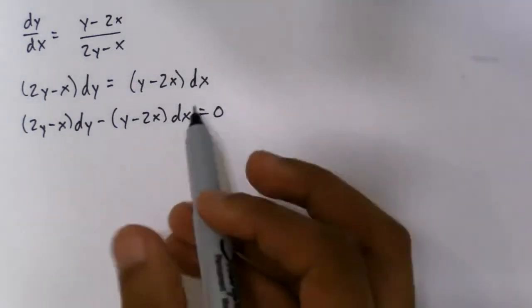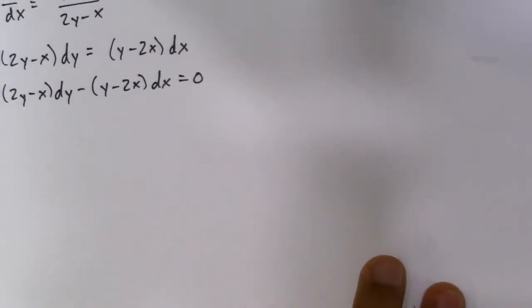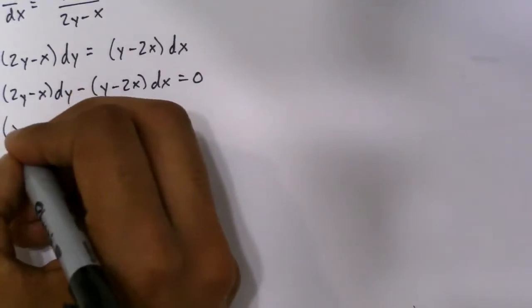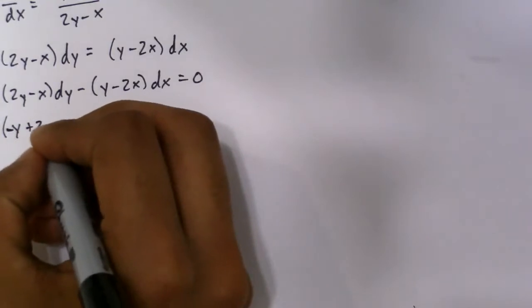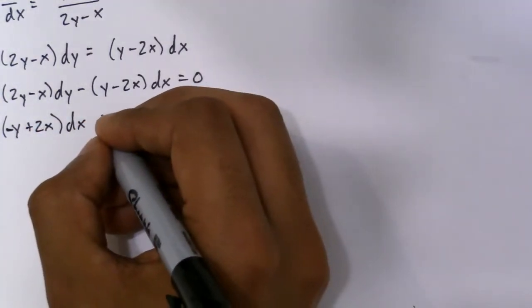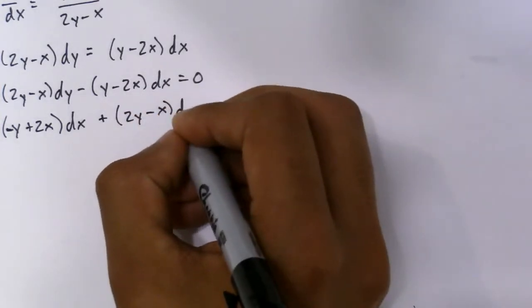So I'm going to move it around a little bit. I'm going to distribute so it looks more standard. So we're going to do negative y plus 2x dx, plus 2y minus x dy equals 0.